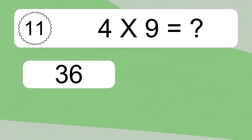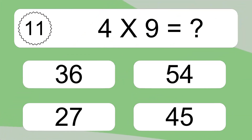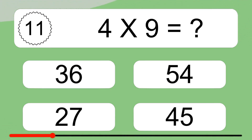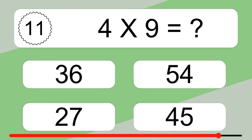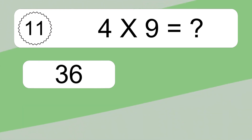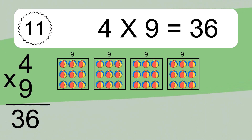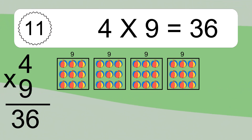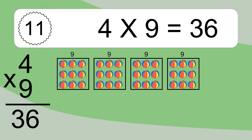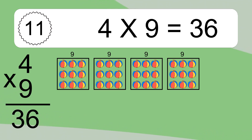4 times 9 equals what? 4 times 9 equals 36. We have 4 boxes, and each box has 9 colorful balls inside. If you count all the balls in all the boxes together, you will have 4 times 9 balls. This equals 36 balls.